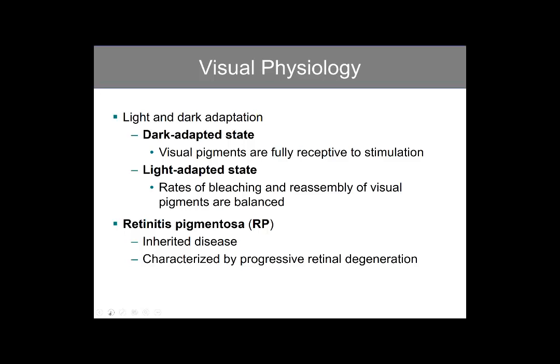Light and dark adaptation. The dark adaptive state occurs when the visual pigments are fully receptive to stimulation, while the light adaptive state finds a state of equilibrium between bleaching and the reassembly of visual pigments. Bleaching occurs when photons strike the retina, causing the photopigments to break down into opsin and retinol.